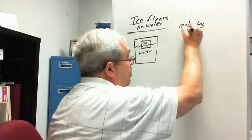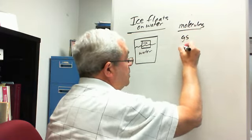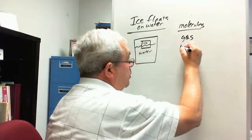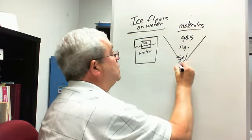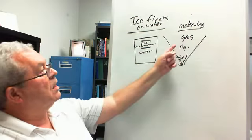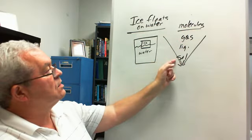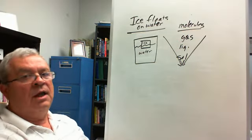Normally as you go from gas to liquid to solid the molecules are getting closer together. And so the liquid is more dense than the gas, the solid is more dense than the liquid normally.